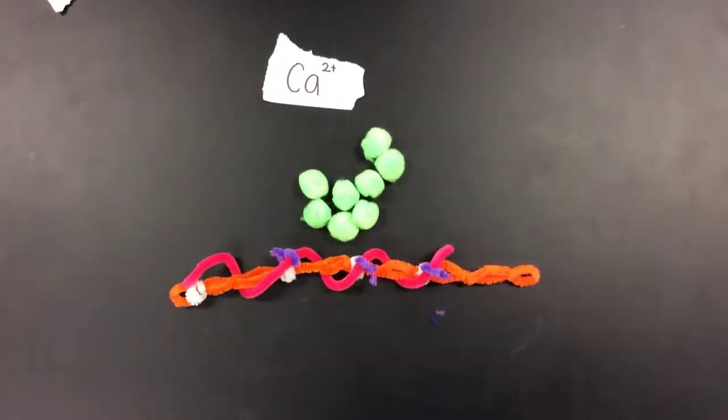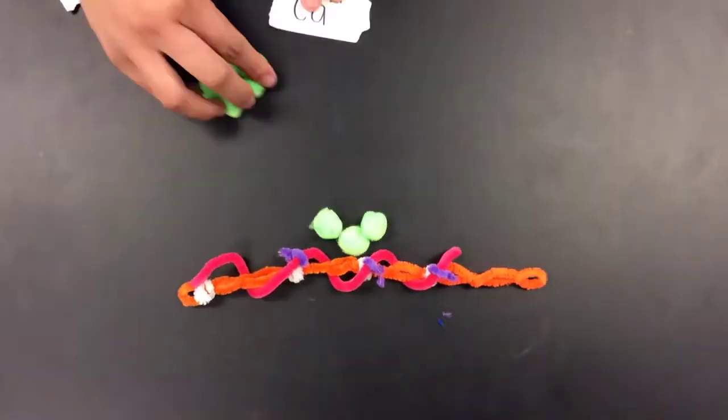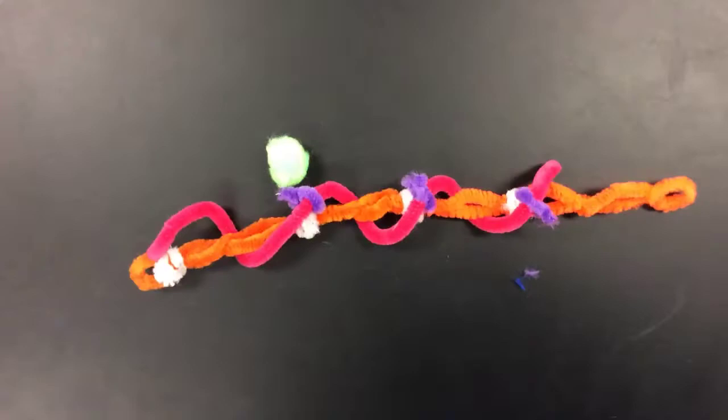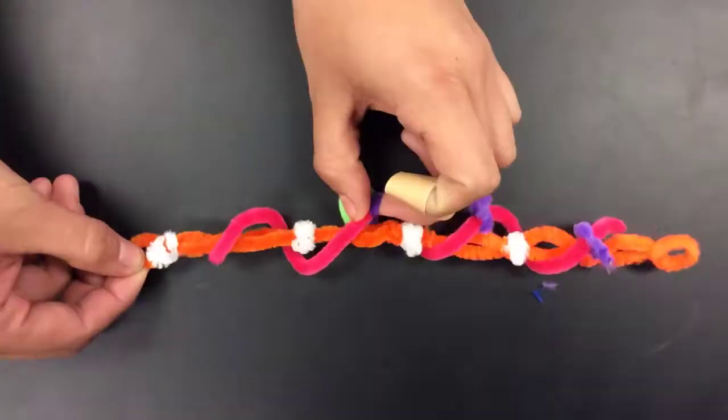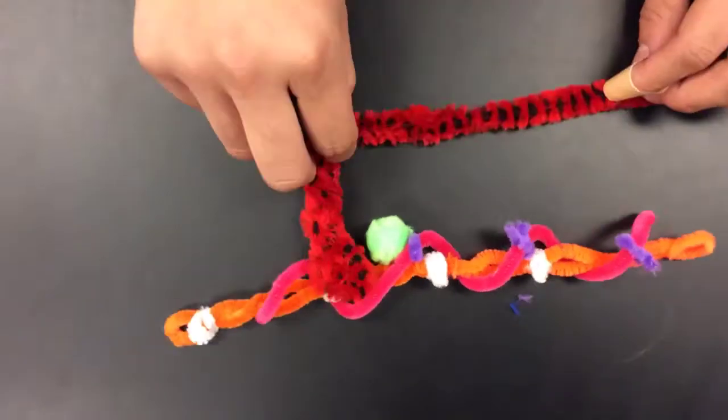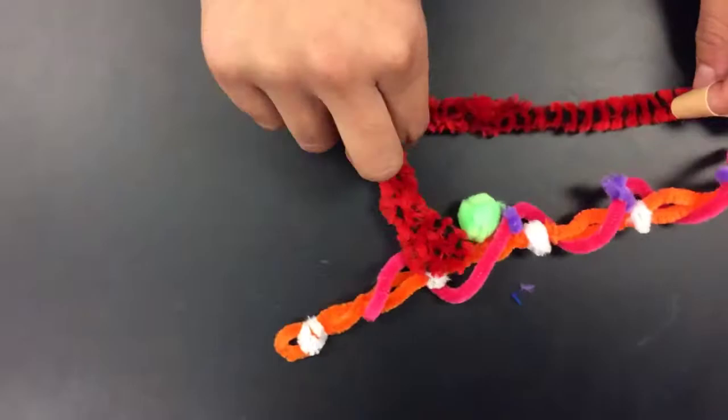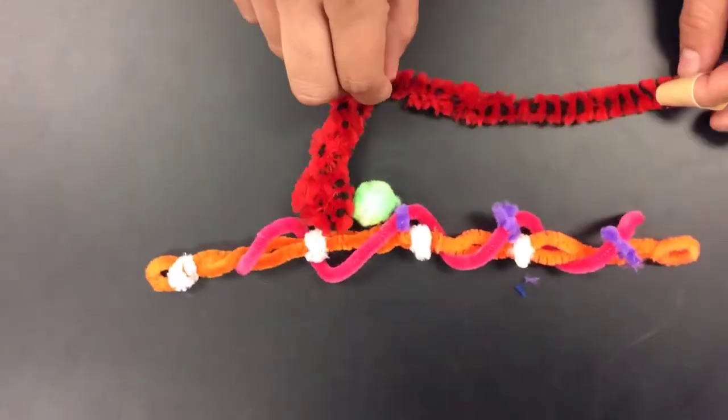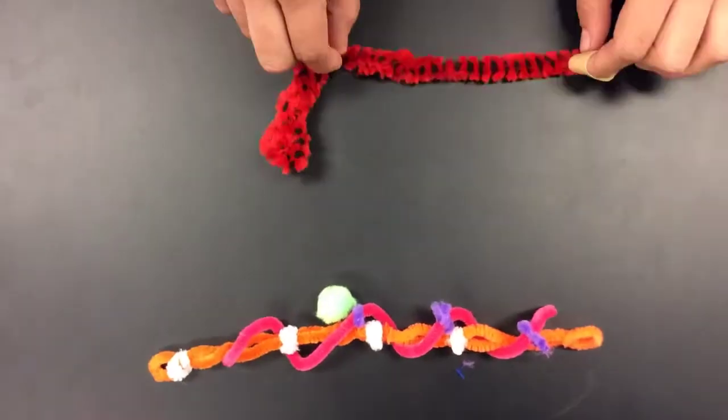This is when calcium ions come into play. The calcium ions attach to the troponin and this causes the tropomyosin to slide, opening up the binding sites and allowing the myosin head to attach. And then the process of contraction can occur again.